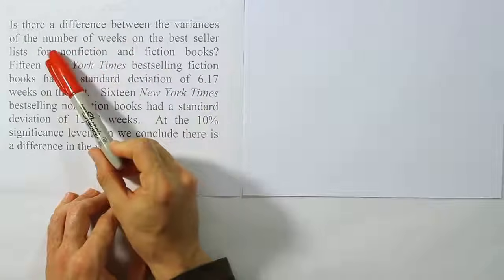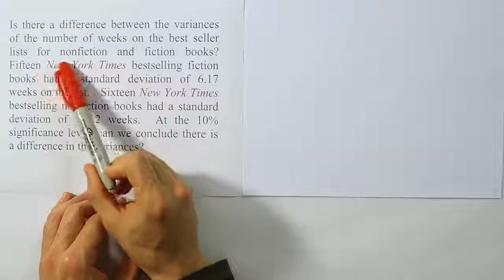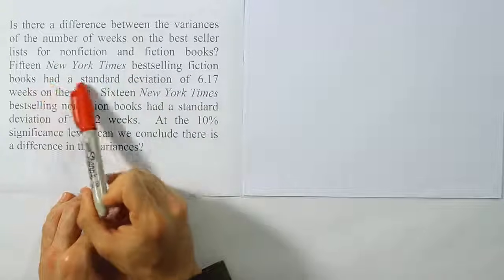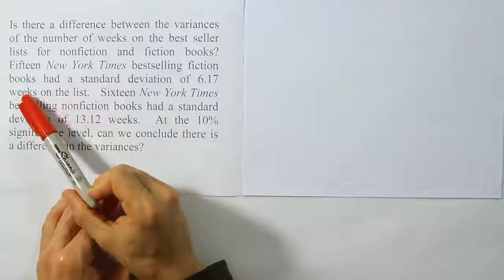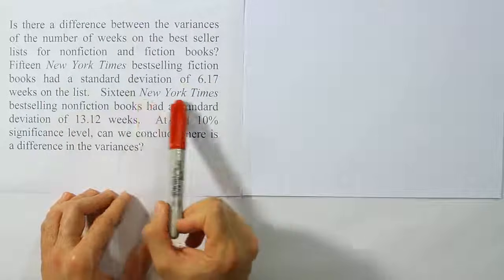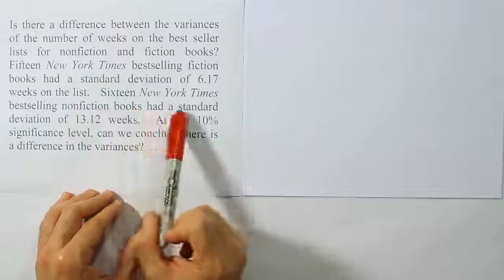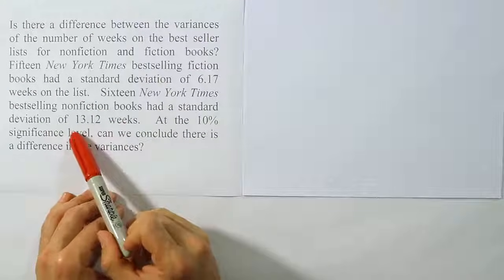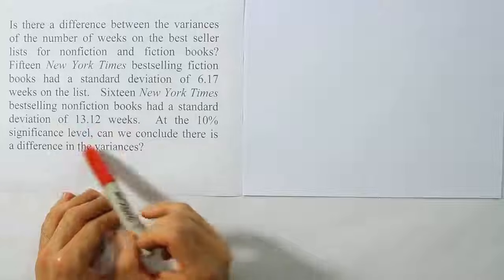Is there a difference between the variances of the number of weeks on the best-seller list for non-fiction and fiction books? Fifteen New York Times best-selling fiction books had a standard deviation of 6.17 weeks on the list. Sixteen New York Times best-selling non-fiction books had a standard deviation of 13.12 weeks. At the 10% significance level, can we conclude there is a difference in the variances?